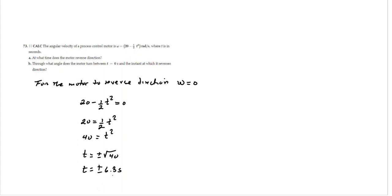The negative solution doesn't make any sense, so we take only the positive solution, which is t equals 6.3 seconds. So we know the model will reverse direction at t equals 6.3 seconds. Now let's find the angle through which the model turns between t equals 0 seconds and the instant at which it reverses direction.